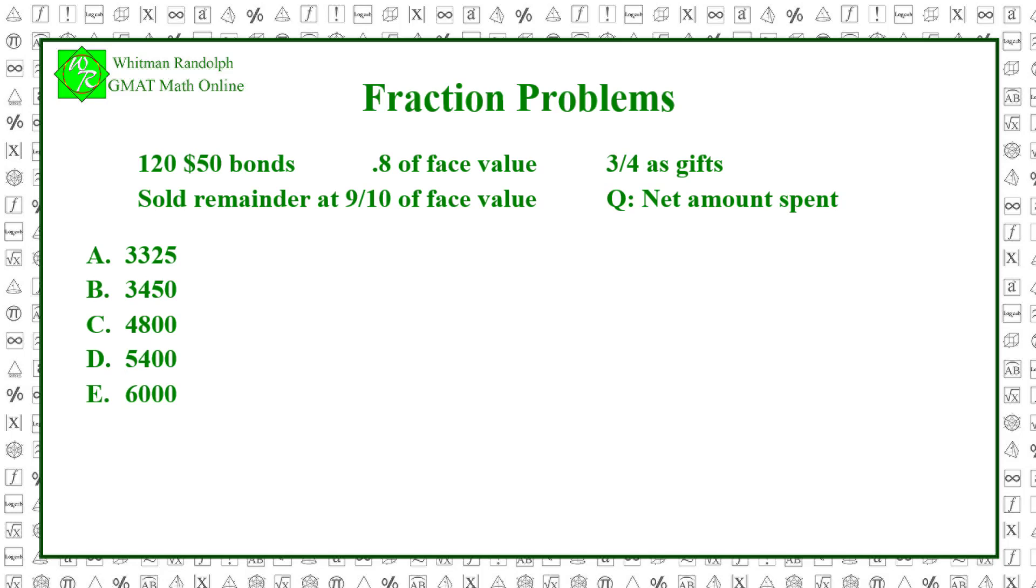Let's find the solution. The net amount spent is equal to the original amount spent minus the proceeds from the sale of the remaining bonds. So, here's the original amount. Original amount equals eight-tenths times 120 times 50, which equals 4800.